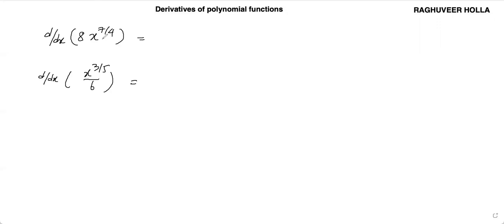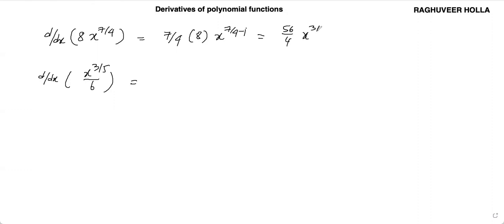Let us solve this problem. This is 7 by 4 multiplied into 8·x to the power of 7 by 4 minus 1. We can write this as 56 by 4·x to the power of 3 by 4, which results as 14x to the power of 3 by 4.